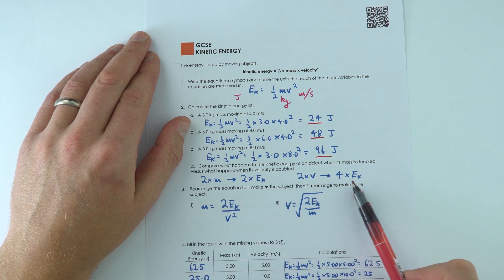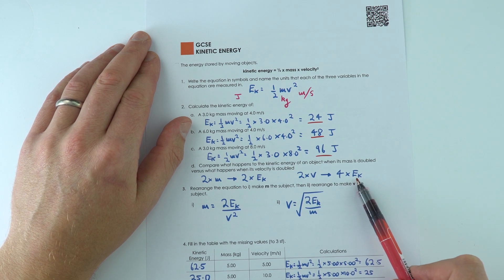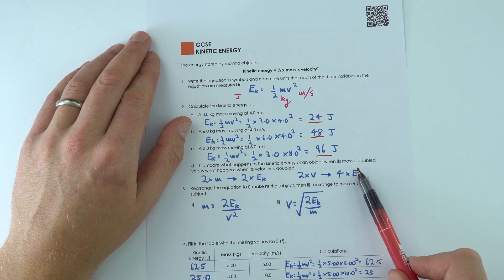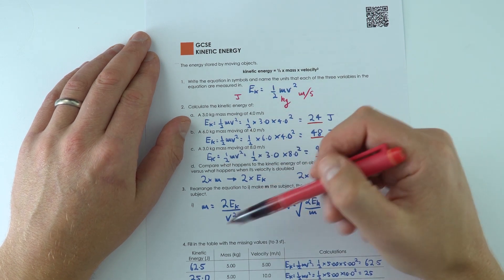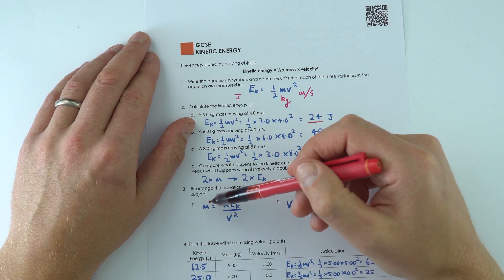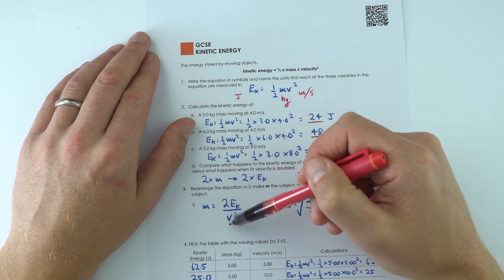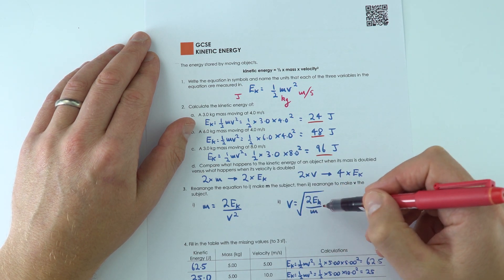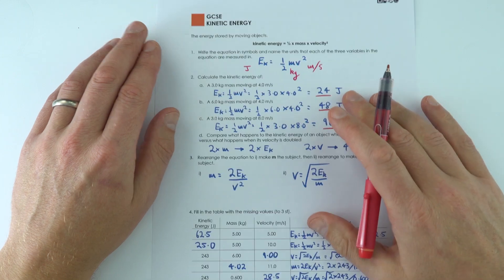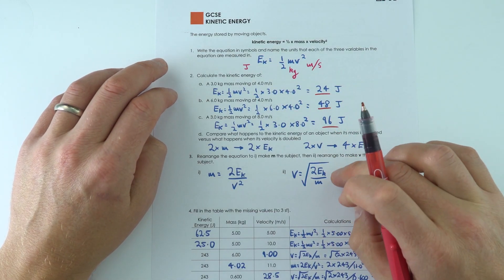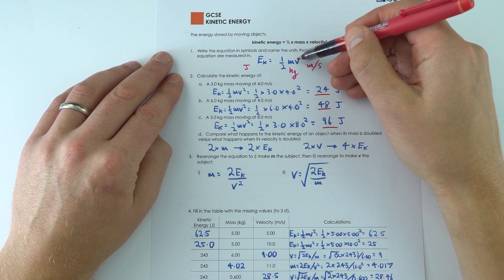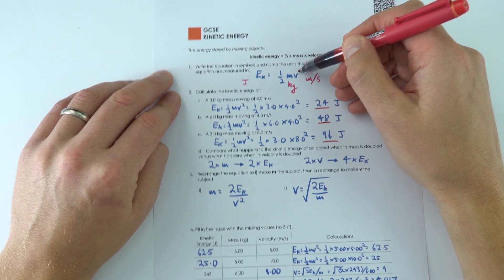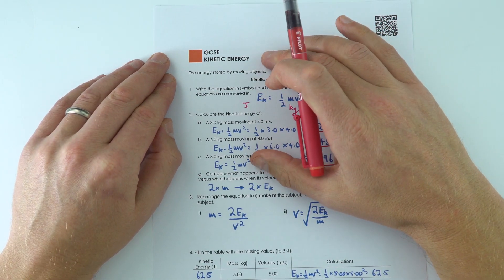Now the other thing I did was I rearranged the equations to say that m equals 2EK over v squared, or v equals the square root of 2EK over m. Okay, this is where it gets a little bit tricky because what we have is a squared term, and sometimes we want to find the velocity—maybe we've been given other things in the question.